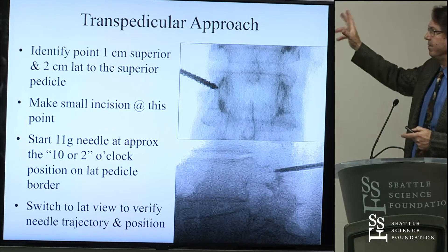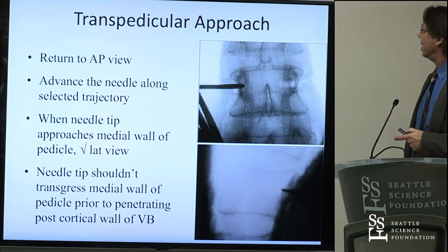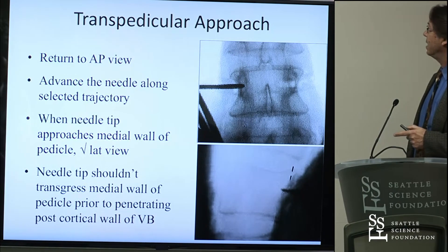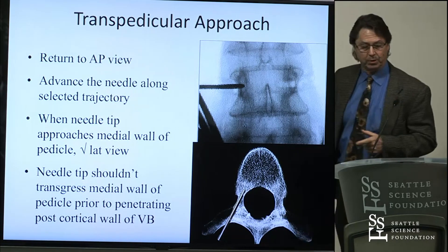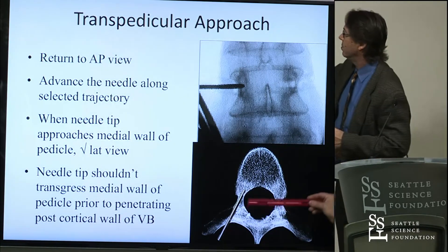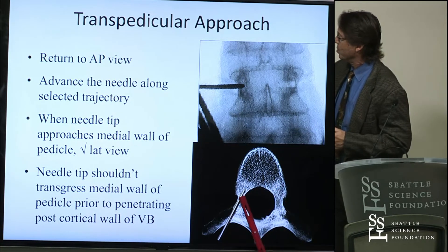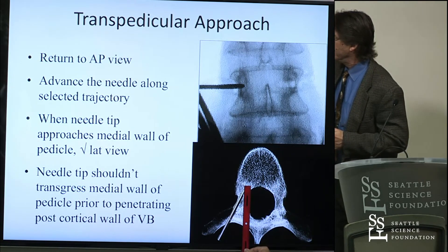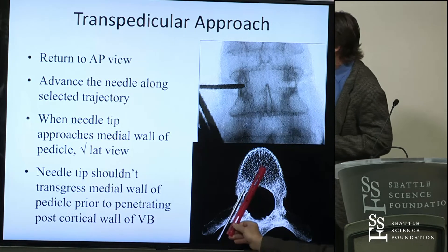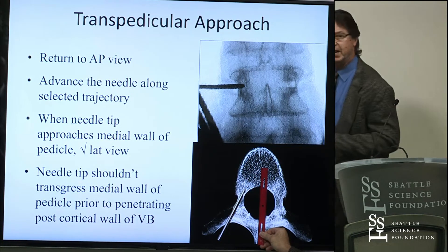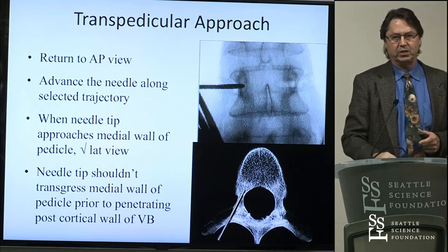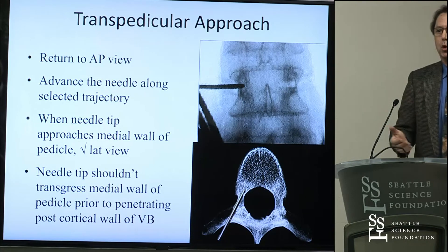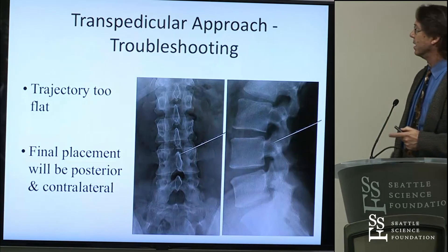You want that view for every one of your levels being treated. Posterior longitudinal ligament level on the lateral, medial border of the pedicle on the AP, targeted to the center of the spinous process in the anterior third of the vertebral body. Using those guideposts as you walk your way down improves your accuracy and likelihood of success.